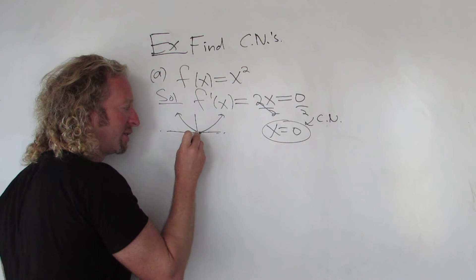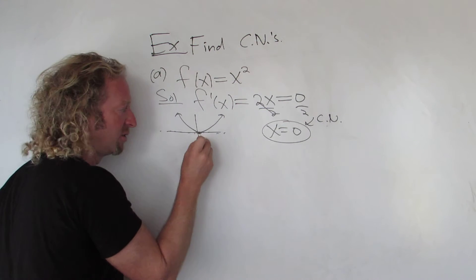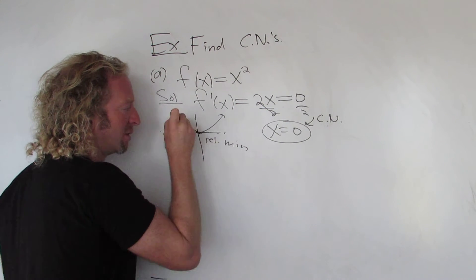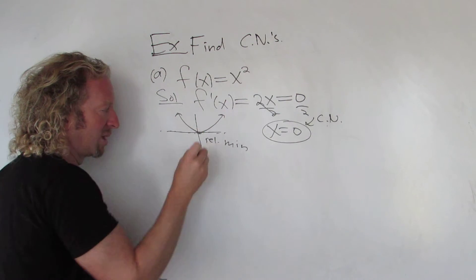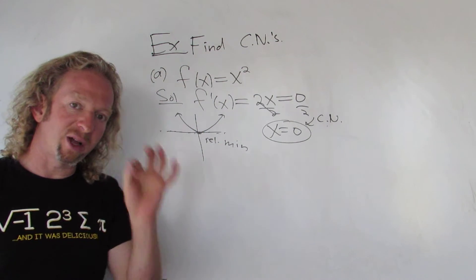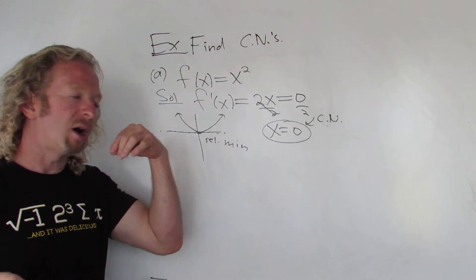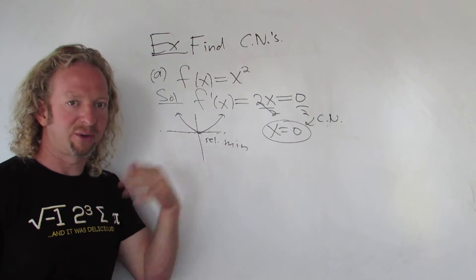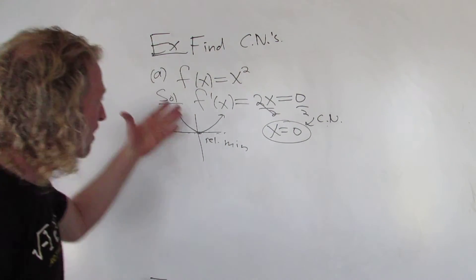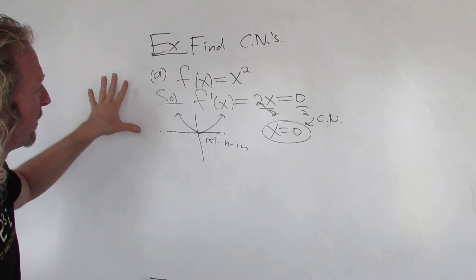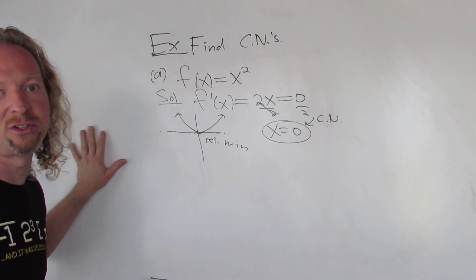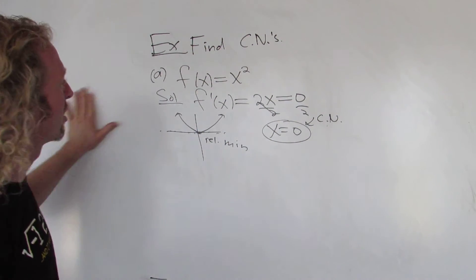In this case you have a relative minimum at x = 0, because that y-value is smaller than the points around it. If you have a relative minimum or maximum, you always have a critical number — but it doesn't go the other way, as we'll shortly see.